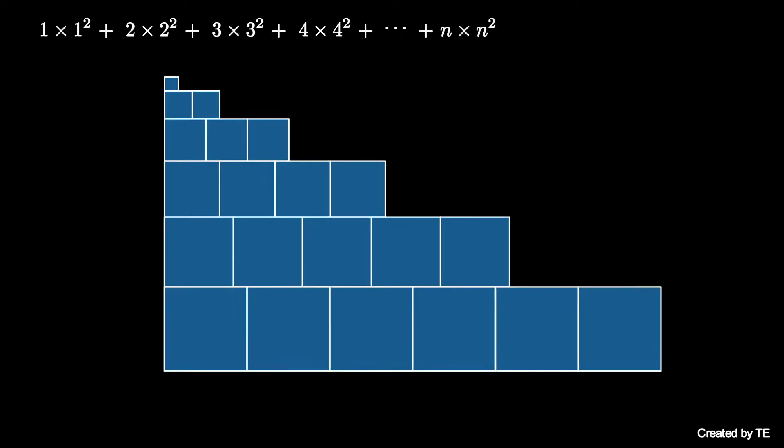Until the last row, row n, has n n×n squares. The side length of this array is the sum of the first n positive integers, which is n(n+1)/2.